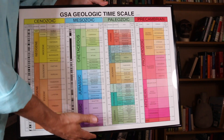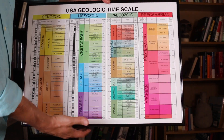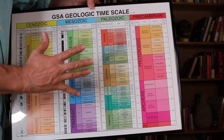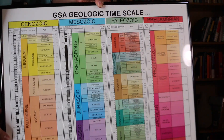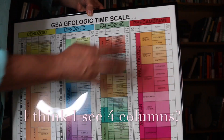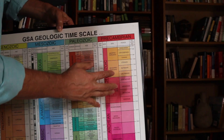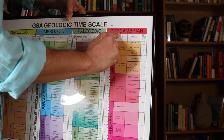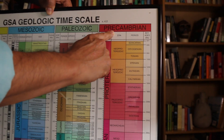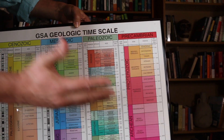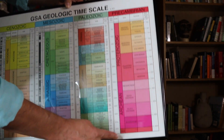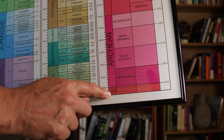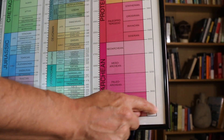So I grabbed this geological timescale off of the wall where I've usually got it hanging. It's got these three columns, but the far right column here is the Precambrian. Can you see that? Precambrian? And it represents the first four billion years of Earth's history. The Hadean — this little piece at the very bottom — is actually 4.6 to 4 billion years ago.